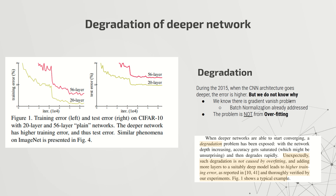This is not an overfitting problem, because overfitting happens when the training error is quite low but the testing error goes high. Here, both errors increase. They also considered whether it was a vanishing gradient problem, but by that year batch normalization had already addressed the vanishing gradient problem. So this is not the reason behind this behavior either. There must be a more fundamental reason why deeper neural networks cannot achieve better performance.